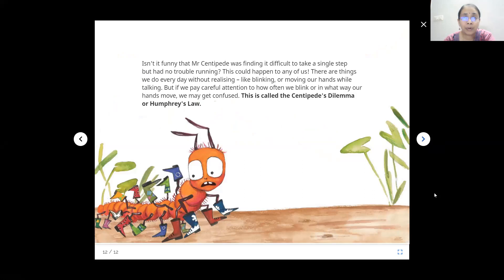This could happen to any of us. There are things we do every day without realizing, like blinking or moving our hands when we are talking. But if we pay careful attention to how often we blink or in what ways our hands move, we may get confused. This is an actual phenomenon and it is called Centipede's Dilemma or Humphrey's Law. That's all for now. I hope you liked it. Thanks for listening.